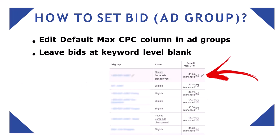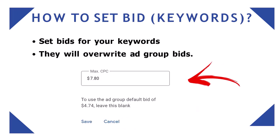To set bids at ad group level, go to your ad groups and edit the default max CPC column. Leave bids at keyword level blank so they don't override the ad group bids. If you want to bid at keyword level, set the bid for your keywords — regardless of whether your ad group has a bid, the keyword bids will always override the ad group level bid.